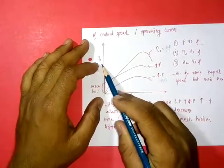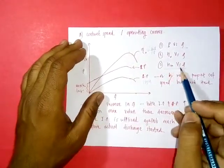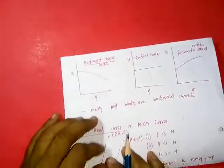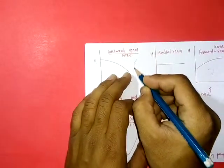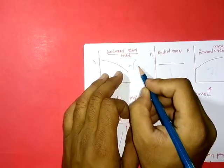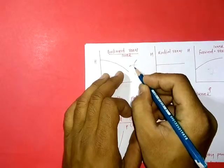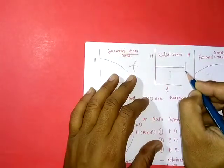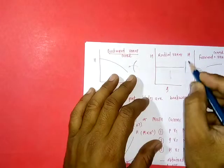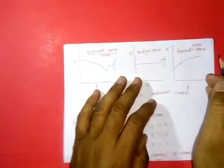The last curve under constant speed is the variation of head versus discharge. You know there are three types of vanes in a centrifugal pump. First is backward curved vanes — if this is the direction of rotation, the vanes are curved back. Second is radial vanes, where the vanes are not curved back or forward but are simply radial.